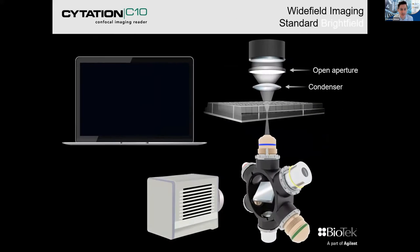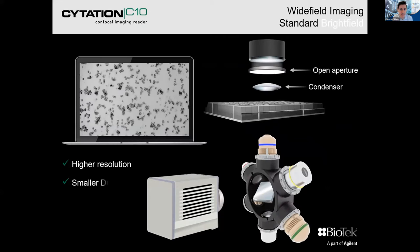For standard bright field, the light moves through an open aperture condenser, then moves to the objective, hits the camera, and you receive an image.